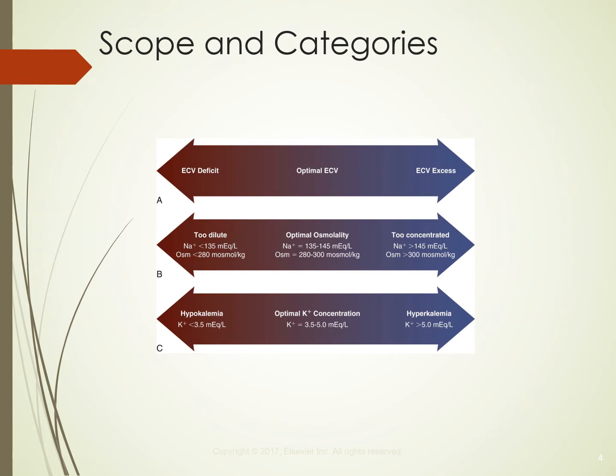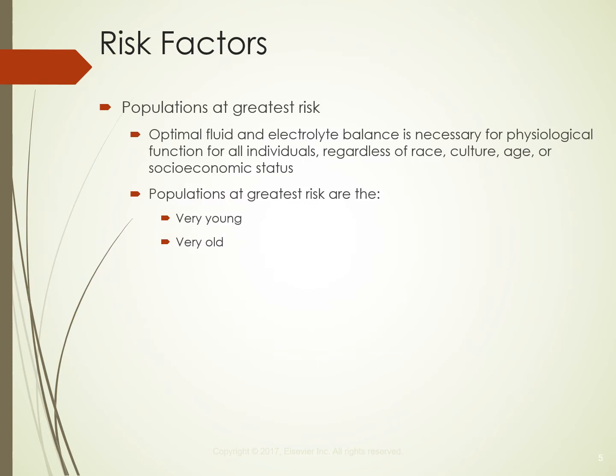Arrow C covers optimal potassium concentration, which is 3.5 to 5.0. Hyperkalemia, meaning too much potassium, is greater than 5.0, and hypokalemia, meaning too little, is potassium less than 3.5. Populations at greatest risk are the very young and the very old — as you age, fluid capacity decreases, and in the young, fluid capacity is greater than body mass.